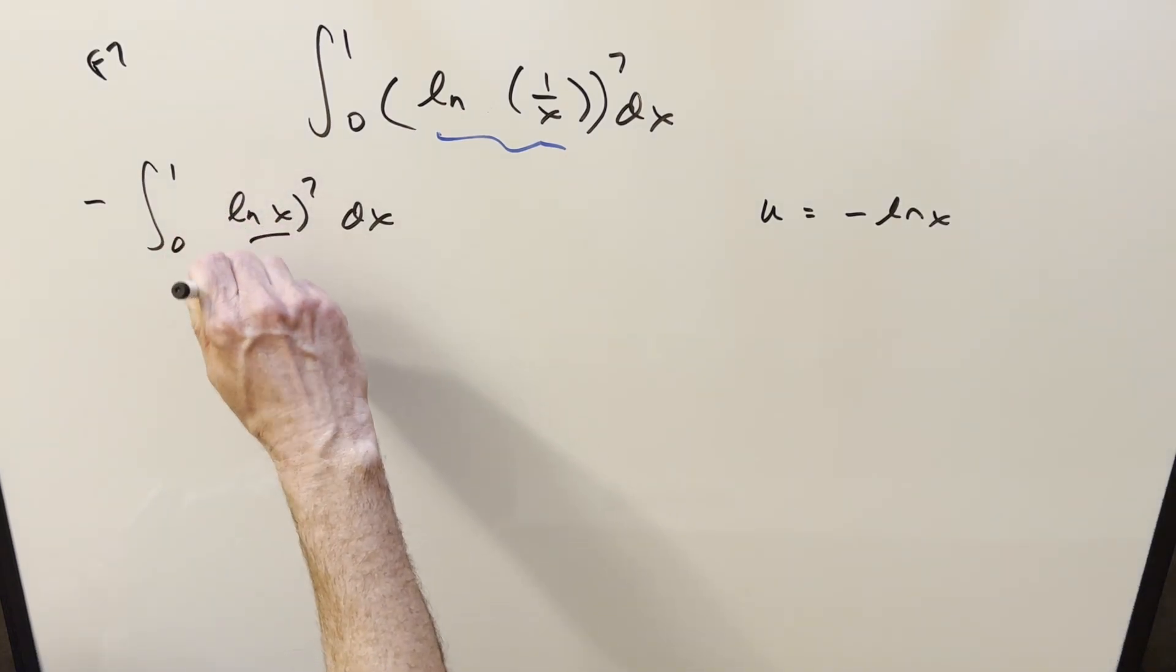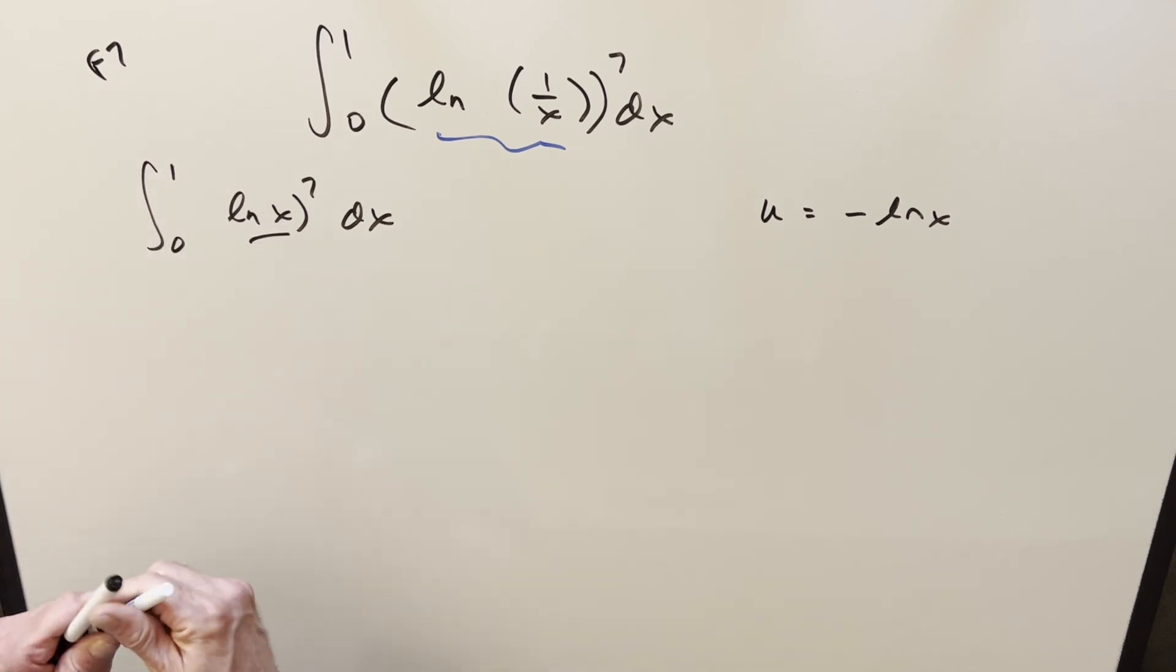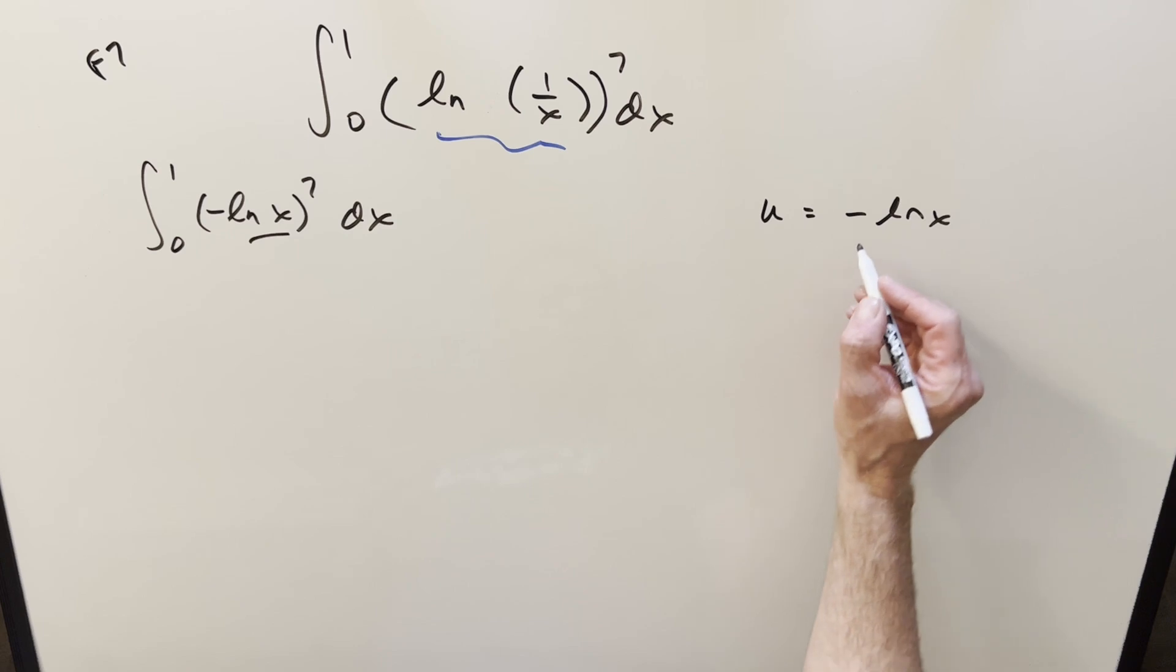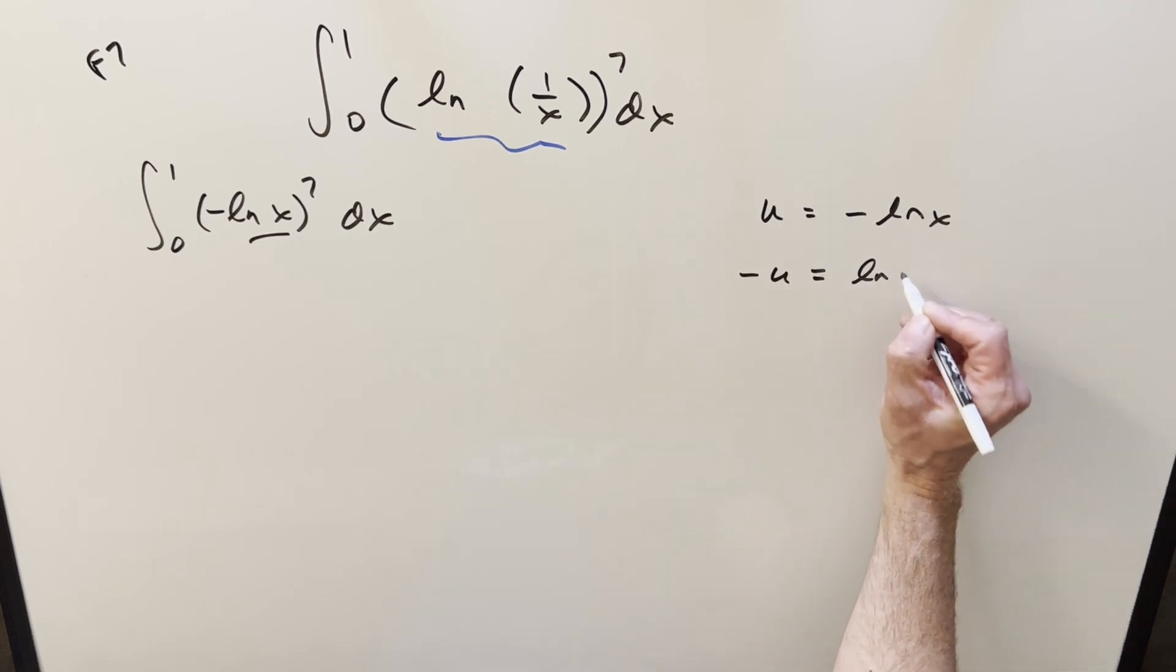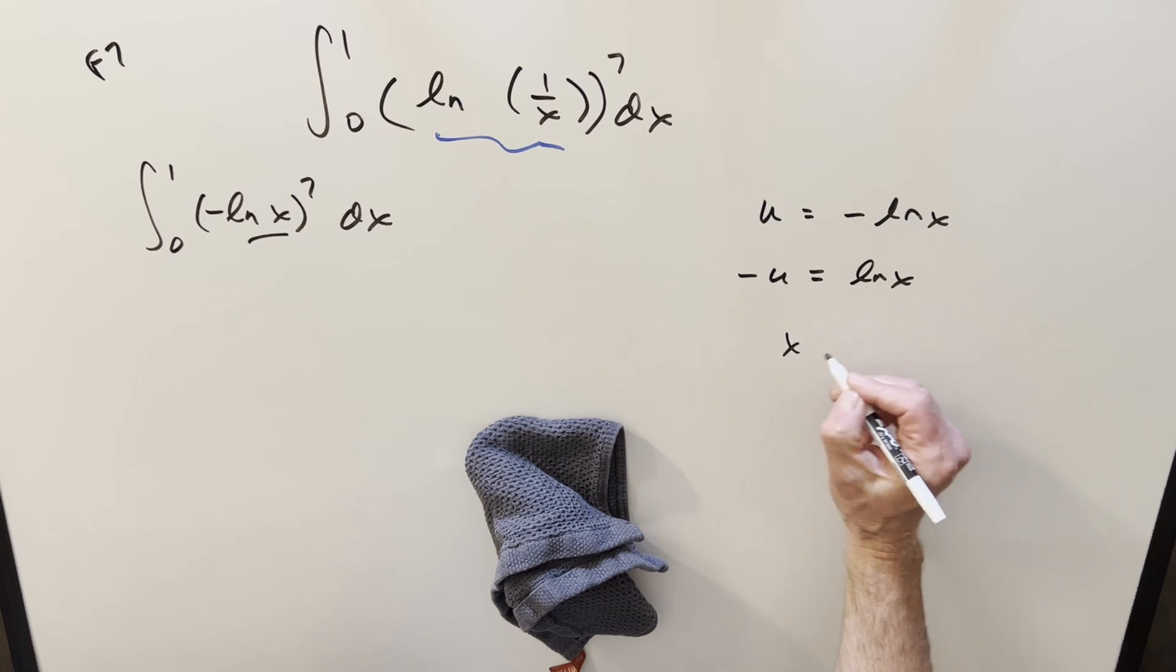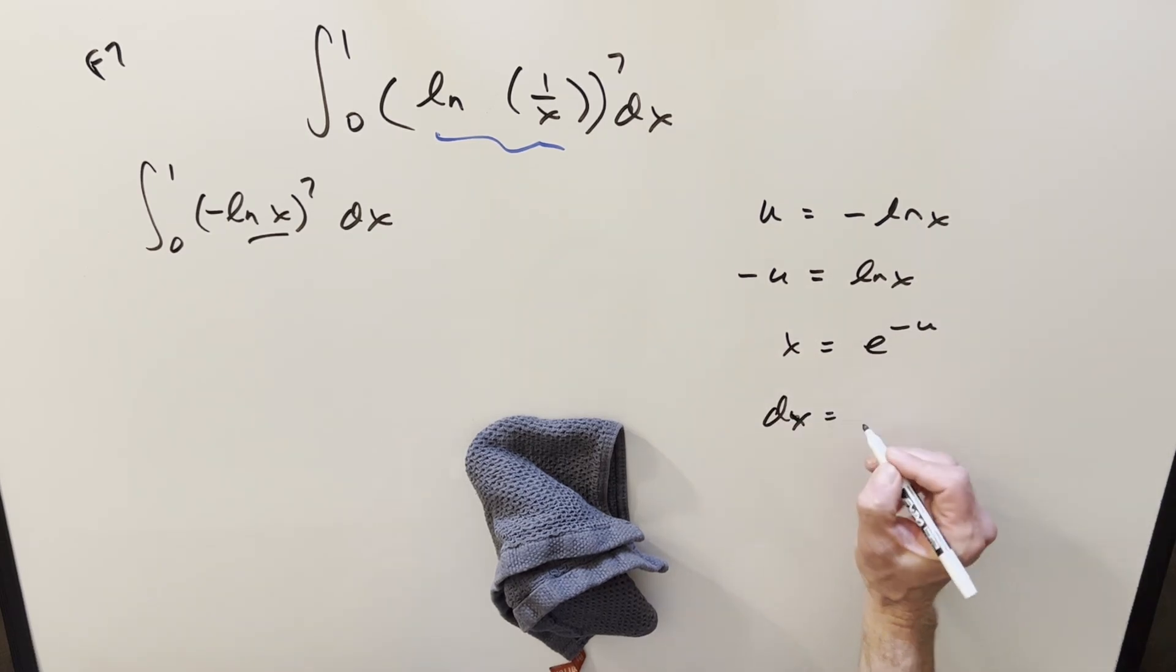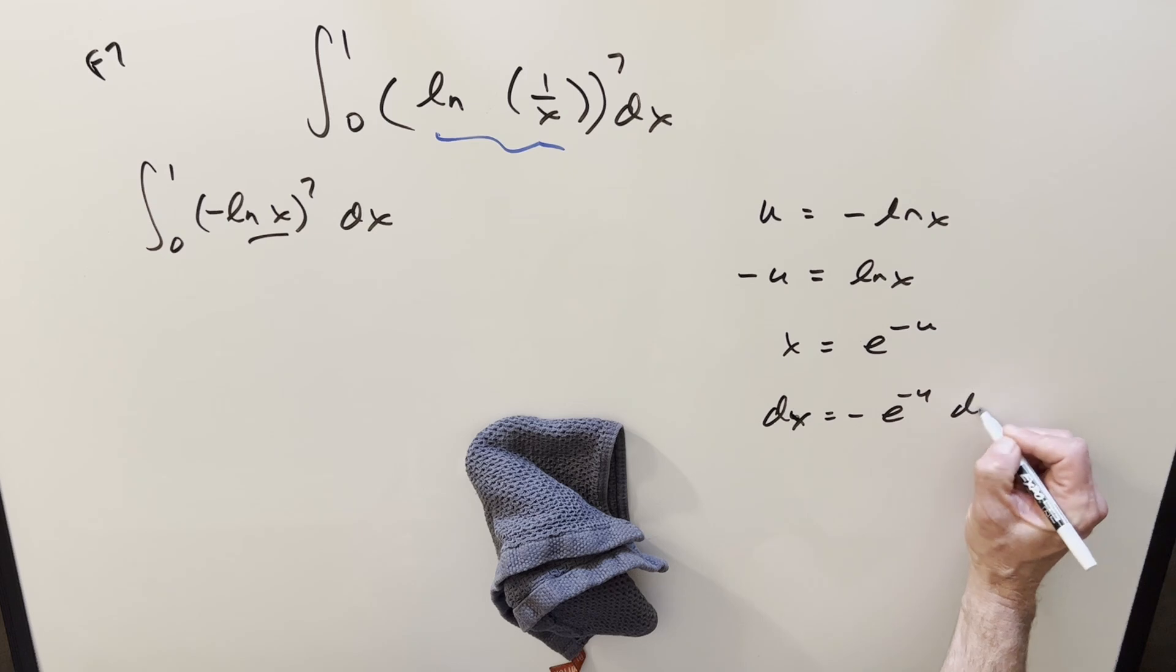So just to be clear, I can just bring this minus sign back in because of the odd power. So write it like this. Then we'll rearrange, solve for x. I can bring the minus sign on the other side, I can write this as minus u equal to ln(x). Solving for x, we get x equal e to the minus u. dx equal to minus e to the minus u du.